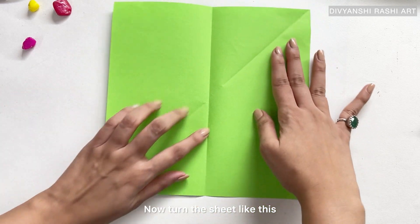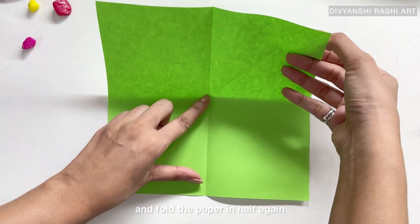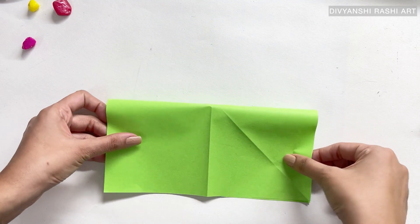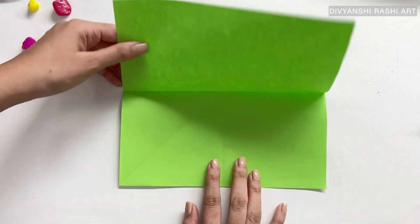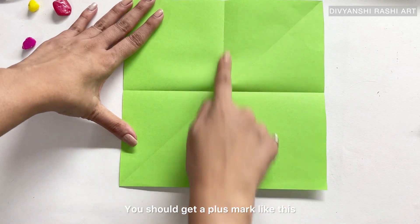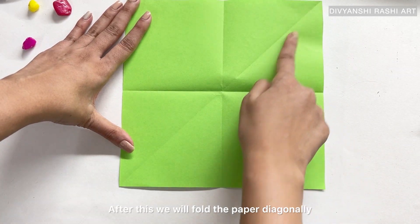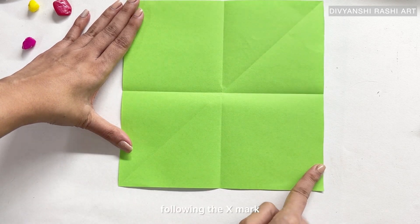Now turn the sheet like this and fold the paper in half again. You should get a plus mark like this. After this, we will fold the paper diagonally following the X mark.